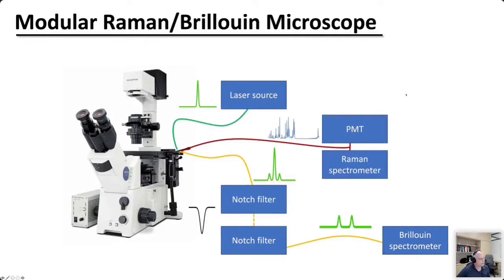If you want to measure this, we need a modular system. We need a laser source, which is not very surprising, but after that we would have a Brillouin spectrometer that acquires the spectrum for every pixel position — which needs notch filters, and I will explain why. In another channel we would have the Raman spectrometer, or we can have a photomultiplier or any kind of detector that detects the spectrum.